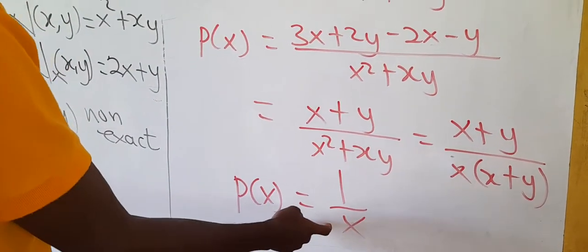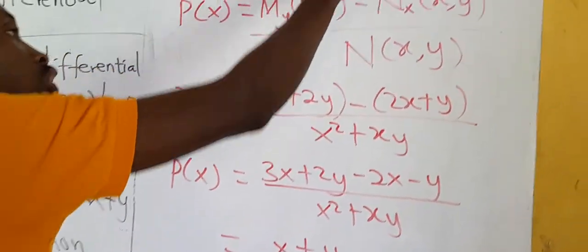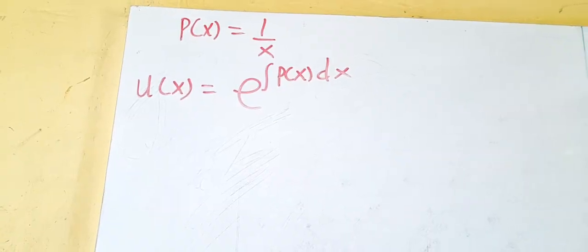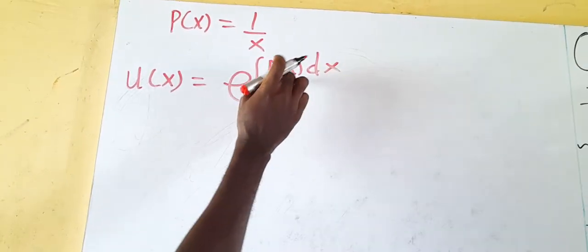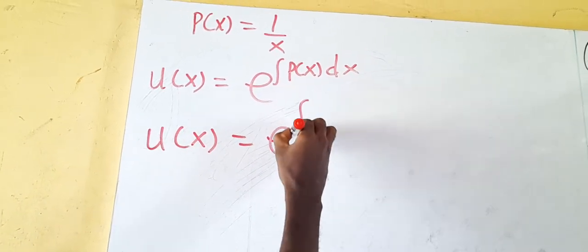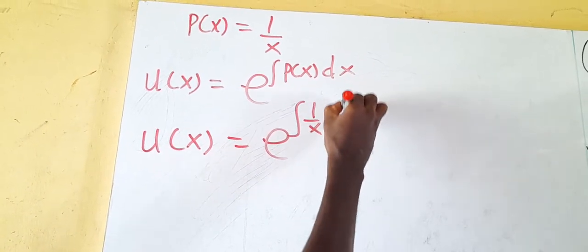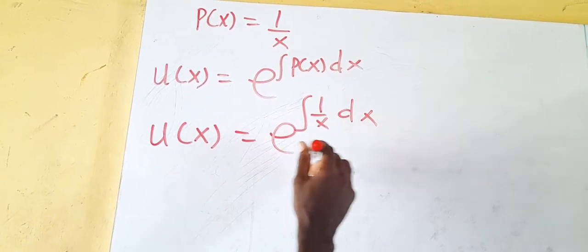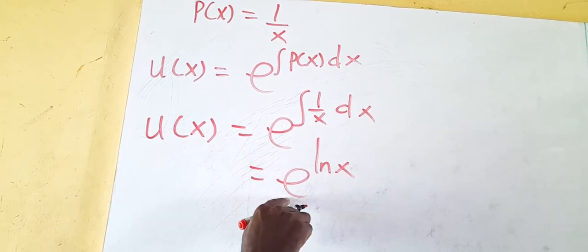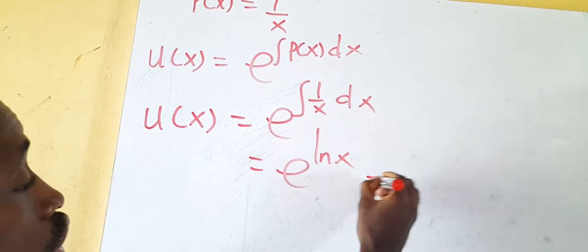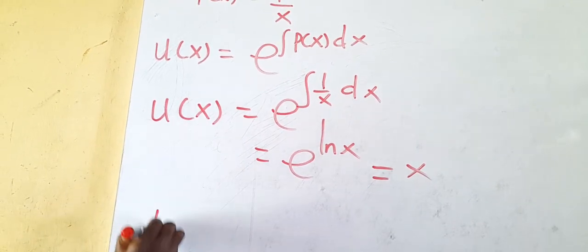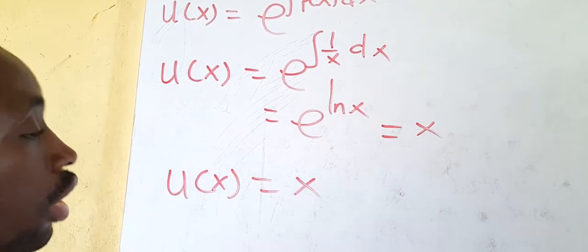Now that we have P(x) = 1/x, we find the integrating factor. U(x) = e to the integral of (1/x) dx = e^(ln x) = x. Anytime the natural log meets the exponential function, the answer is just the argument — so our integrating factor U(x) is simply x.